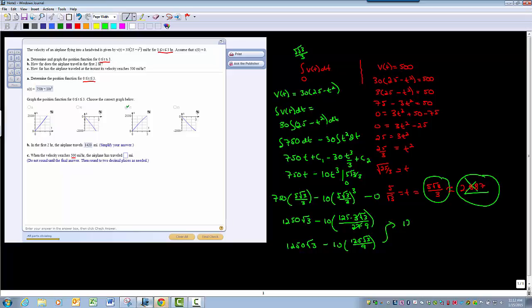So this is going to be 1250 times the square root of 3 minus 1250 times the square root of 3 over 9. I multiply the 10 in. So let's get this guy over 9 as well. So that's 1250 times 9. So that's 11250 times the square root of 3 minus 1250 times the square root of 3 all over 9. Which gives me, what's 11250 minus 1250?